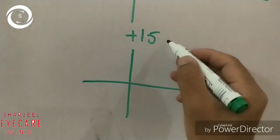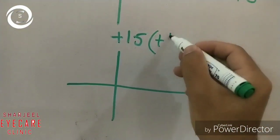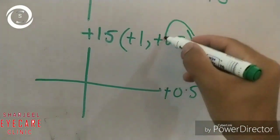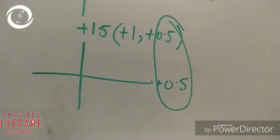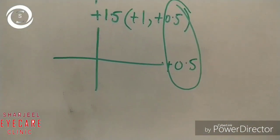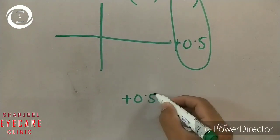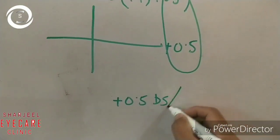So now plus 1.5 can be written as plus 1 and plus 0.5 as well. Now plus 0.5 is same in both axes, so we can have plus 0.5 diopter sphere.